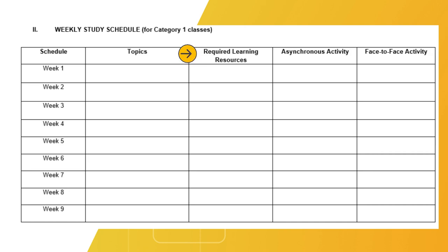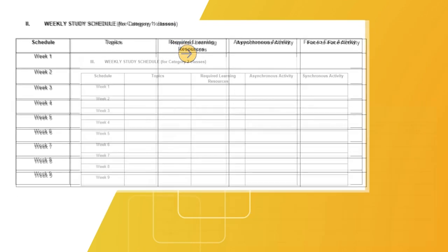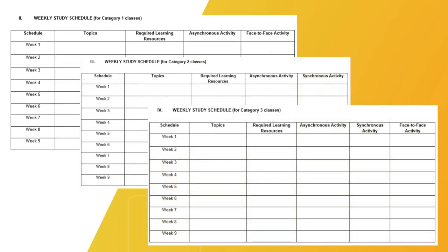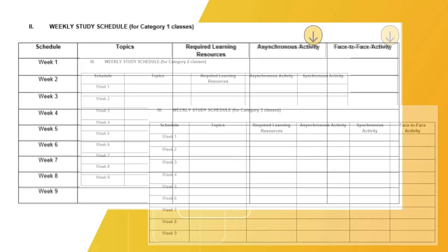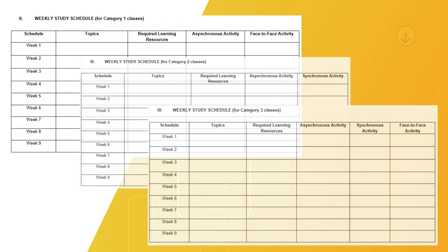All learning activities, including formative assessments such as quizzes, student presentations, and graded recitation, are listed in columns 4, 5, and 6. For Category 1, under columns 4 and 5, indicate the specific date and time for the student's asynchronous and face-to-face activities, respectively.